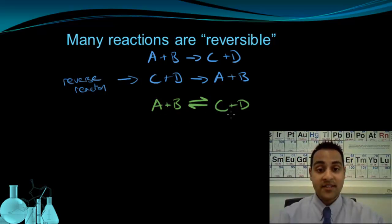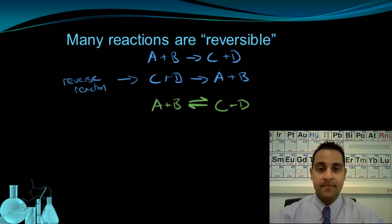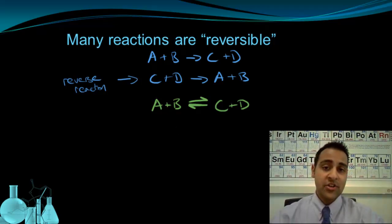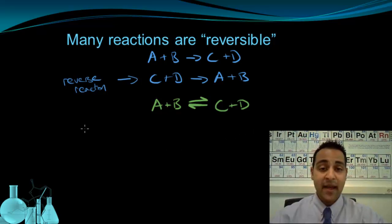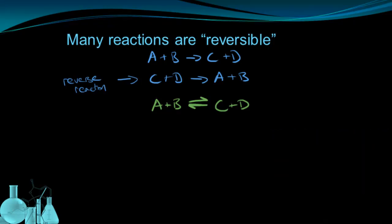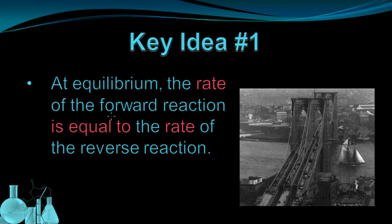When the forward and reverse reactions are happening at the same time, the reaction can reach a state of equilibrium. Equilibrium generally means a state of balance. We say that when something is at equilibrium, the rate of the forward reaction is equal to the rate of the reverse reaction — this is a very important point.